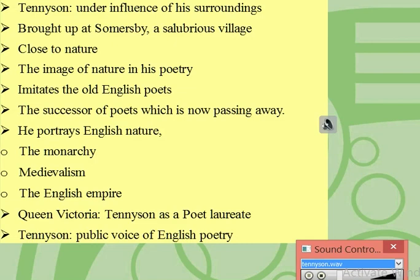It is a well-known fact that each writer or poet is under the influence of his environment and the society in which he lives, especially in the first years of his life. Alfred Lord Tennyson was brought up in the salubrious environment at Summers Bay. It's a really quiet village in England and he had plentiful opportunities for being close to nature. Therefore, you can find the beautiful image of nature in his poetry repeatedly.